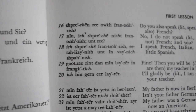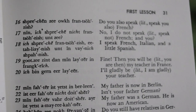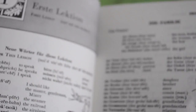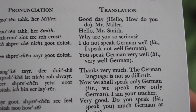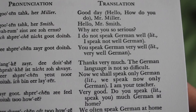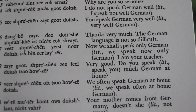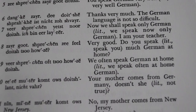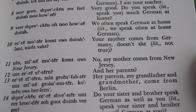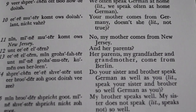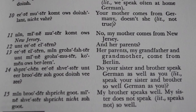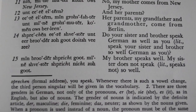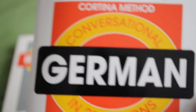Everything in the first chapter is relevant — this is how it should be. You have stuff like: 'Good day, hello, how do you do Mr. Miller? Why are you so serious? I do not speak German well. You speak German very well. Thanks very much. The German language is not so difficult. Now we shall speak only German.' I consider that very relevant content. 'Do your sister and brother speak German as well as you?' I just got this course yesterday.